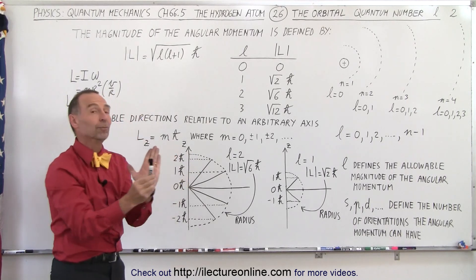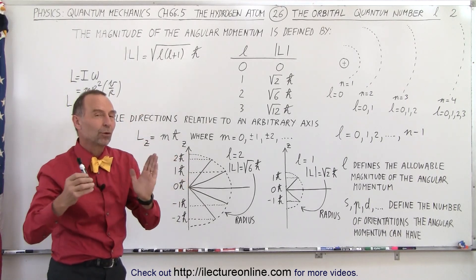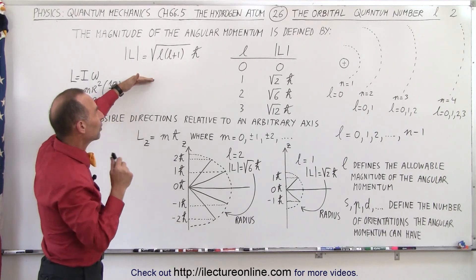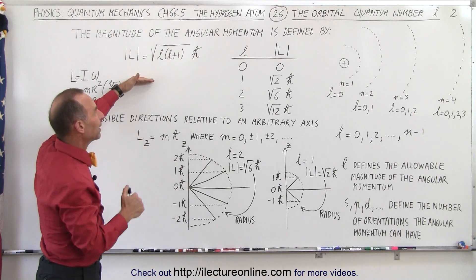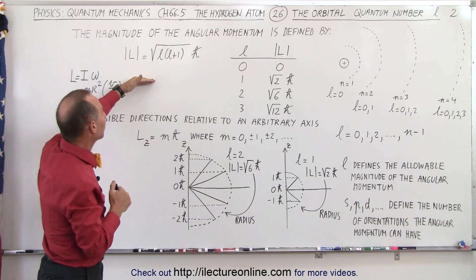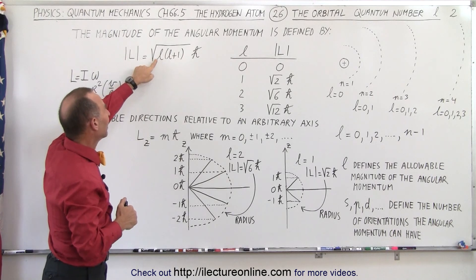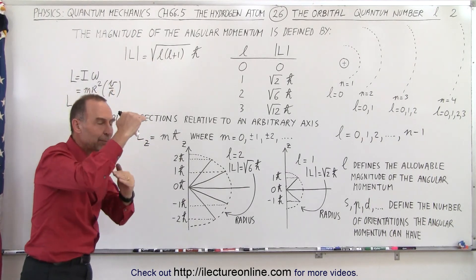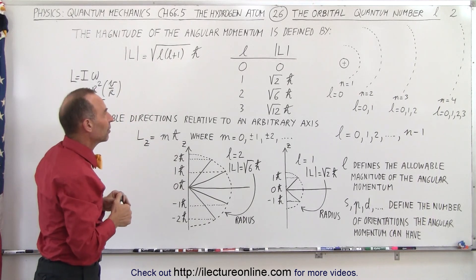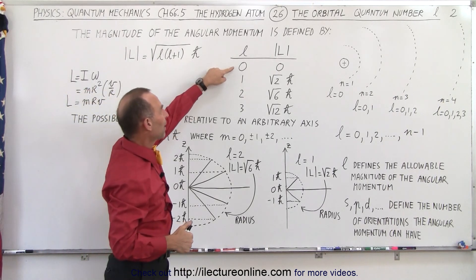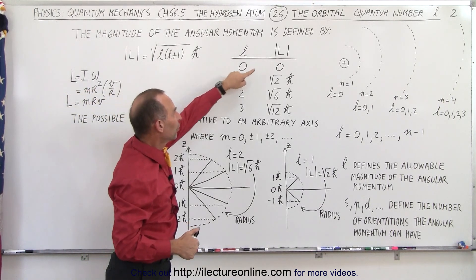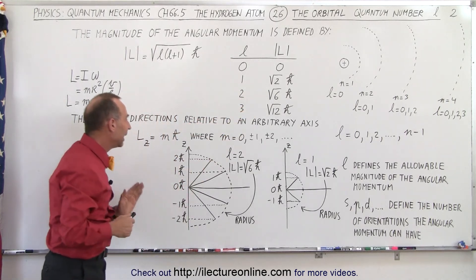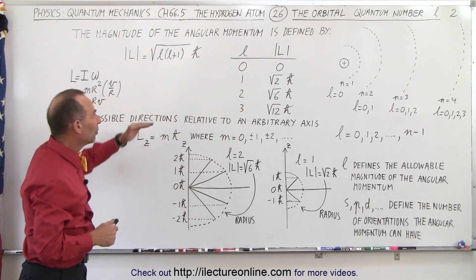So we'll learn more about that as well. Now you can see there are two things we need to know about the orbital quantum number: first, the equation defines the amplitude that the angular momentum can have, and that depends on the value of L — there will be one specific value for the amplitude of the angular momentum.